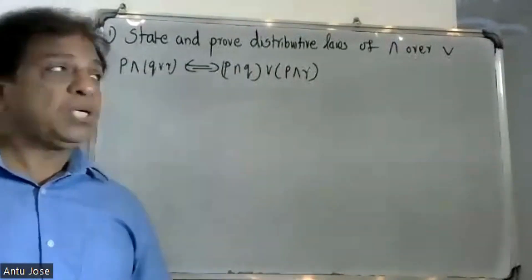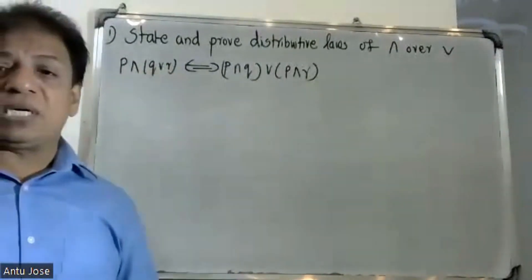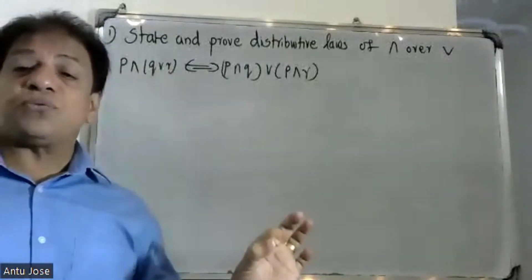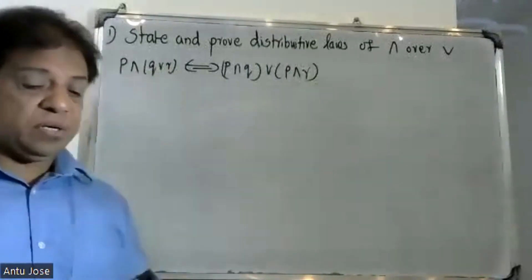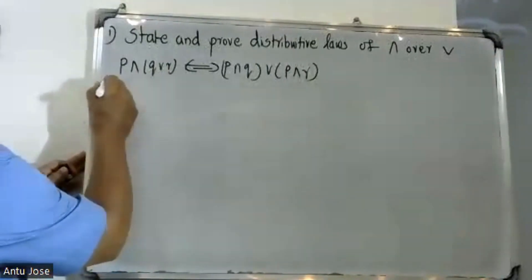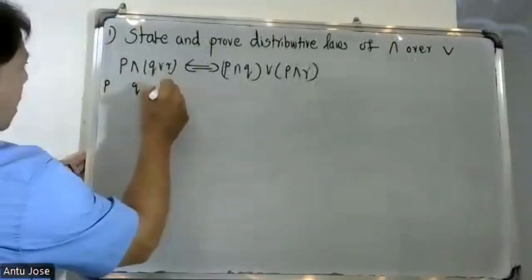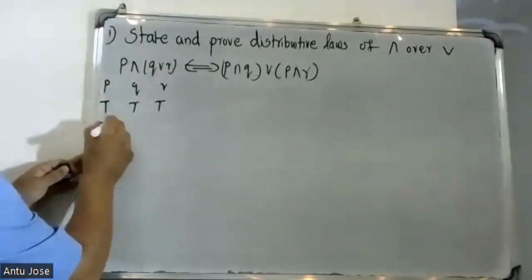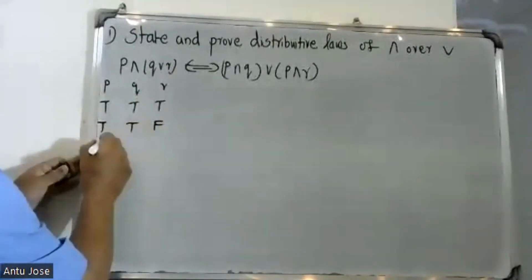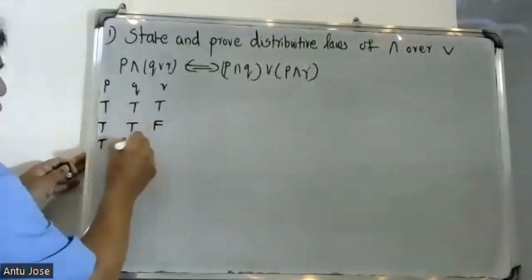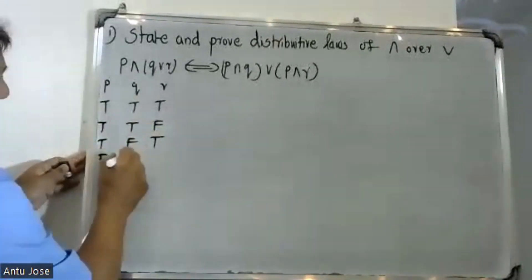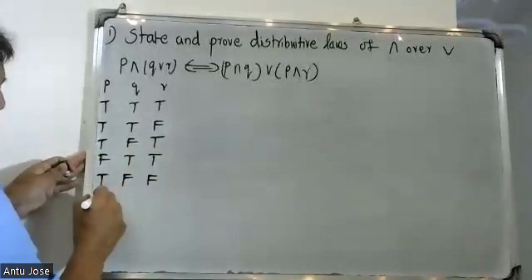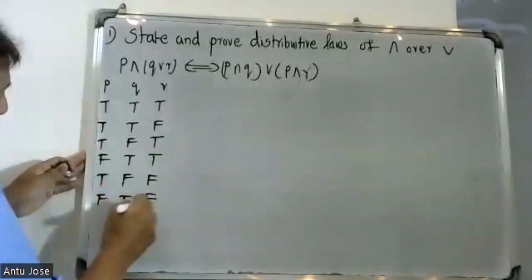Here we have three variables: P, Q, R. Therefore the possible number of truth values is 8 combinations: T T T, T T F, T F T, T F F, F T T, F T F, F F T, F F F.